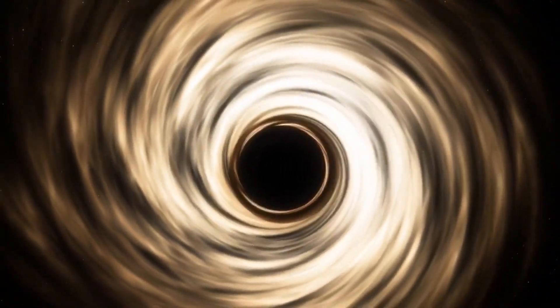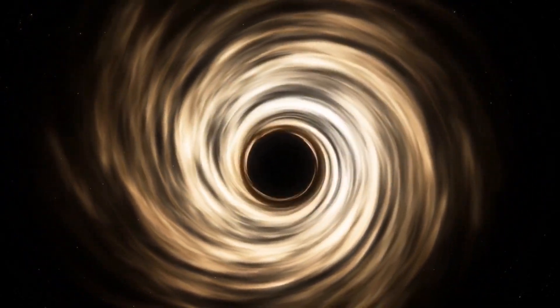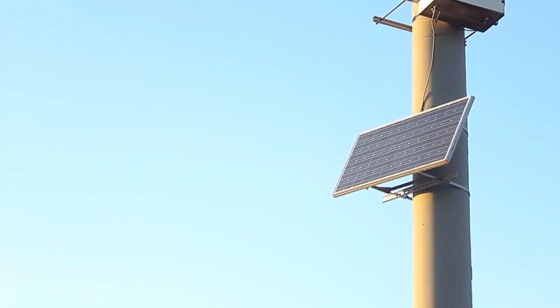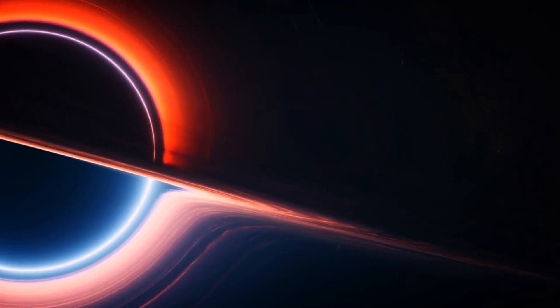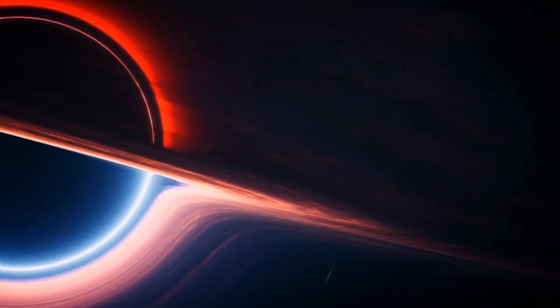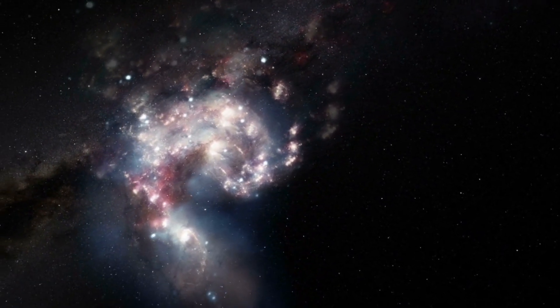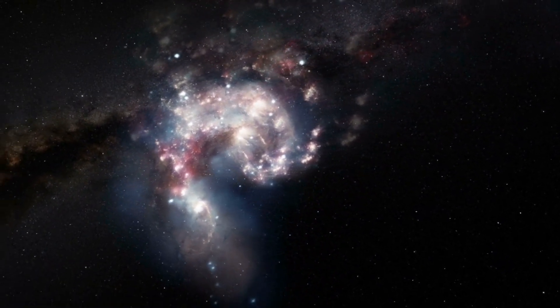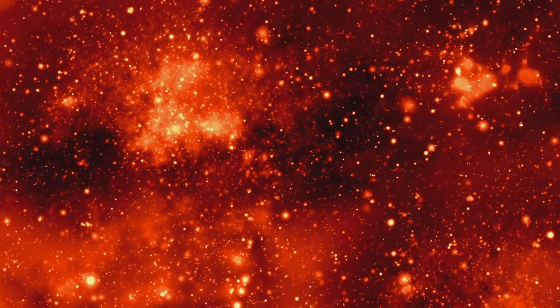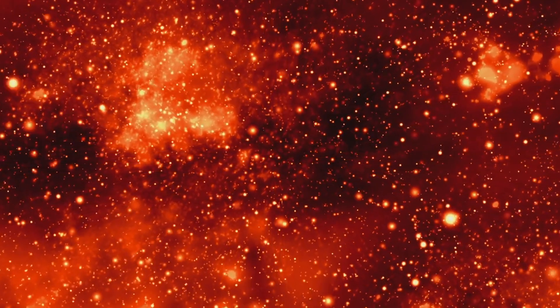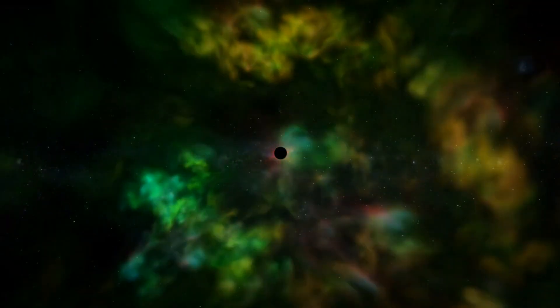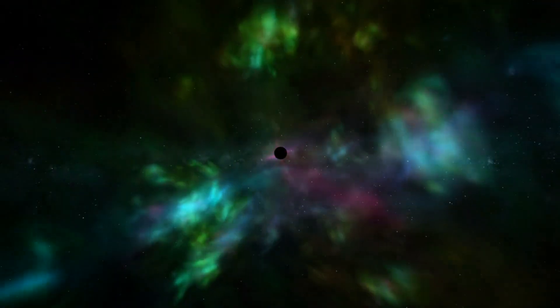When supermassive black holes reach a separation distance of one parsec, it becomes difficult for them to lose their orbital energy. However, if a mechanism exists that can help them overcome this difficulty and bring them closer than one parsec, these supermassive black hole binaries would spiral around each other, emitting gravitational waves in the nanohertz frequency range. Given the common occurrence of galaxy mergers, it is expected that there are numerous such spiraling binaries of supermassive black holes.